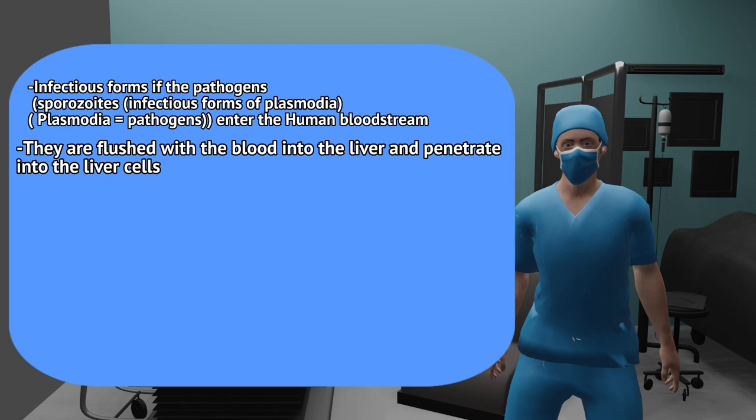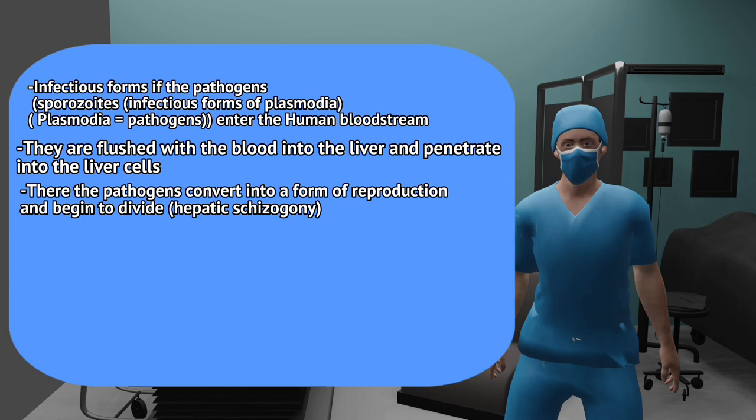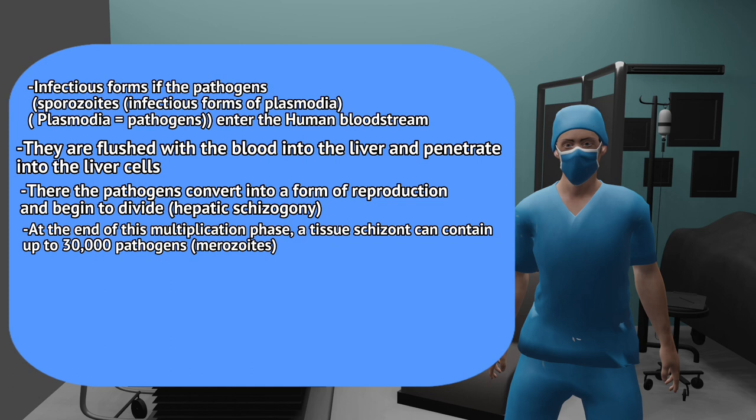There the pathogens convert into a form of reproduction and begin to divide — hepatic schizogony. At the end of this multiplication phase, a so-called tissue schizont can contain up to 30,000 pathogens — merozoites.